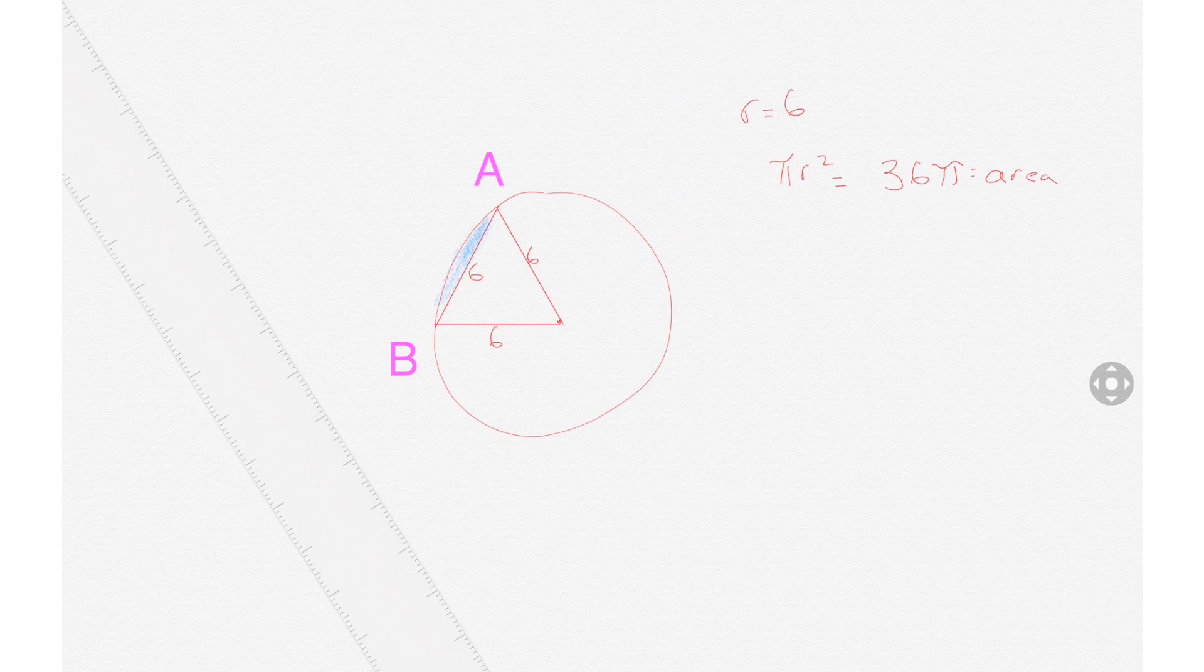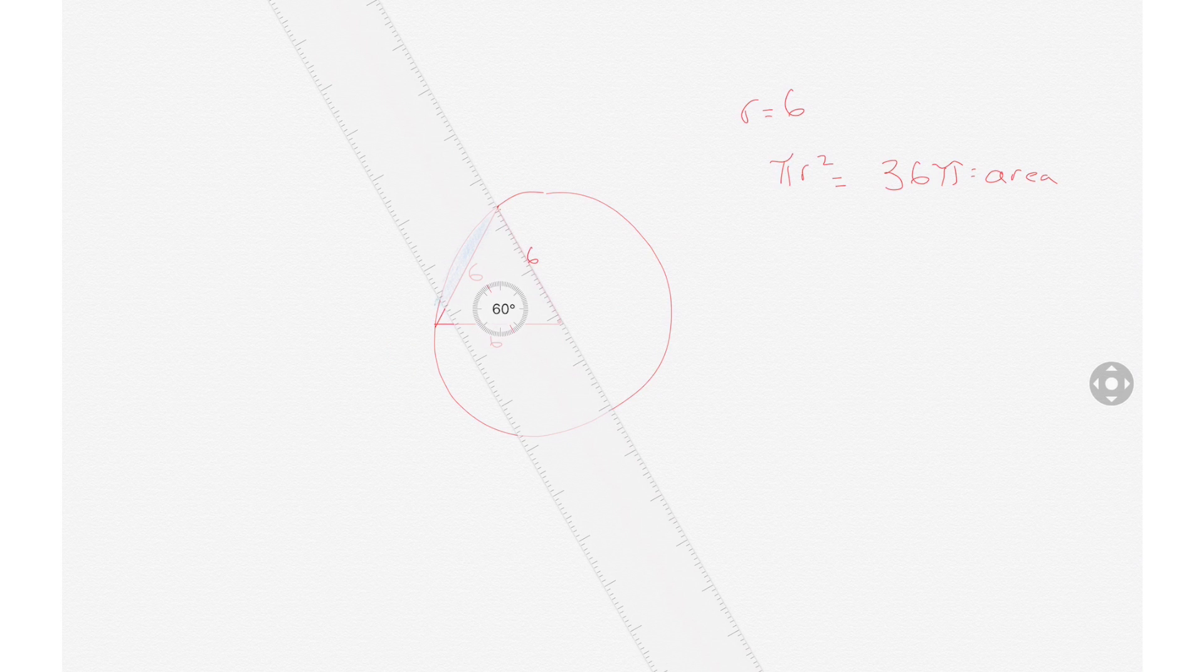Anytime you have a triangle with all equal sides, it's an equilateral triangle, and every angle is 60 degrees. There's three angles. They all equal 180 degrees, and they're all equal angles, so they have to be 60 degrees each.